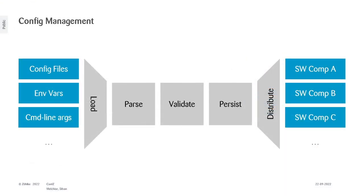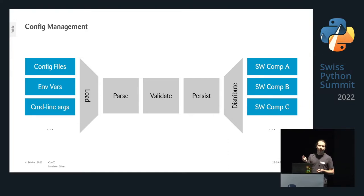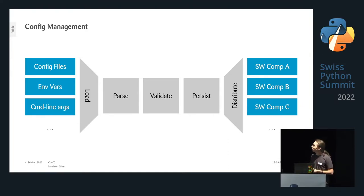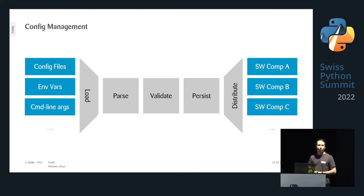In basically every program we write the same few steps: we load the config, parse it, validate it, persist it, and distribute it to different software components. Usually that's not a big deal — argparse, three to four lines, you're fine. But as software grows, especially in data science projects, configs tend to get really large: model config, training config, validation config, cloud connectors, secret vaults, and so on.